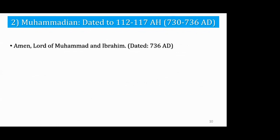Another short one: 'Amen, Lord of Muhammad and Ibrahim,' dated 736. I like this one because Ibrahim was particularly popular in the Negev area — there was an Abrahamic sect that still existed at that time. When we pray as Sunni Muslims, we say something like 'exalted is Muhammad and his people, and Abraham and his people.' This inscription links Muhammad with Abraham and the idea of the Abrahamic religion.